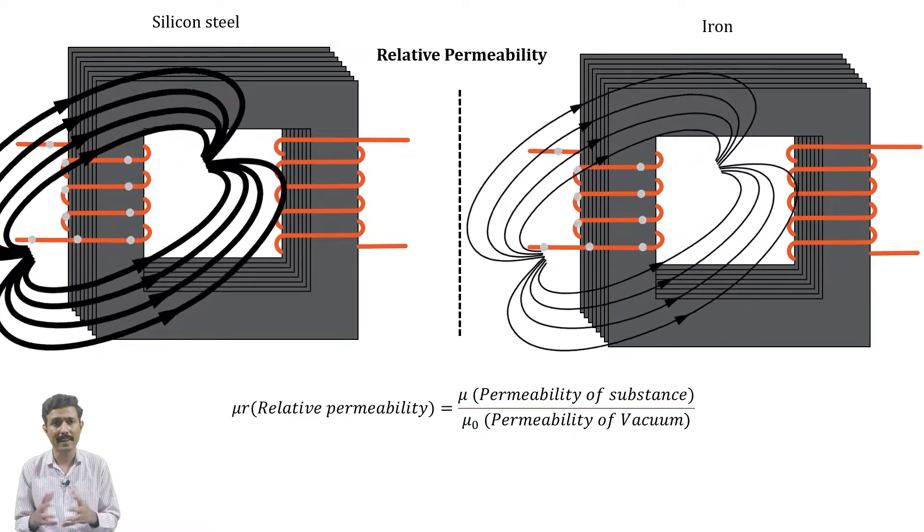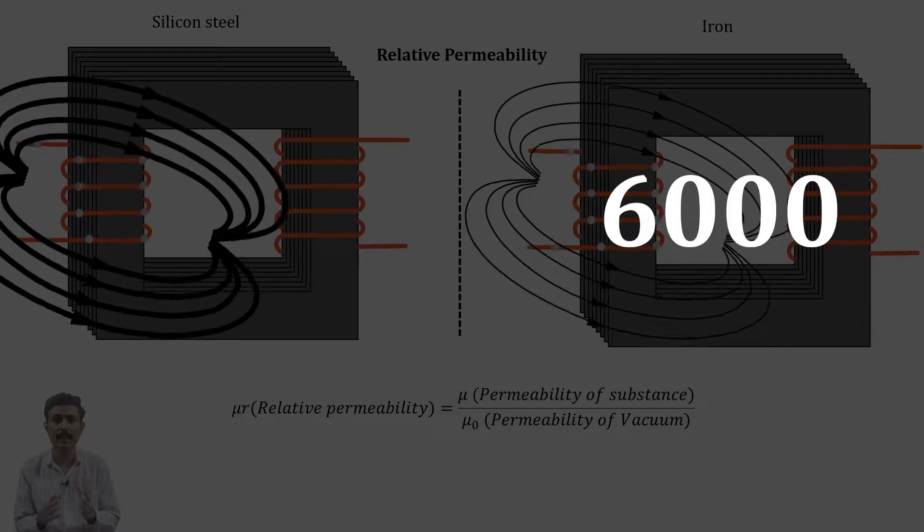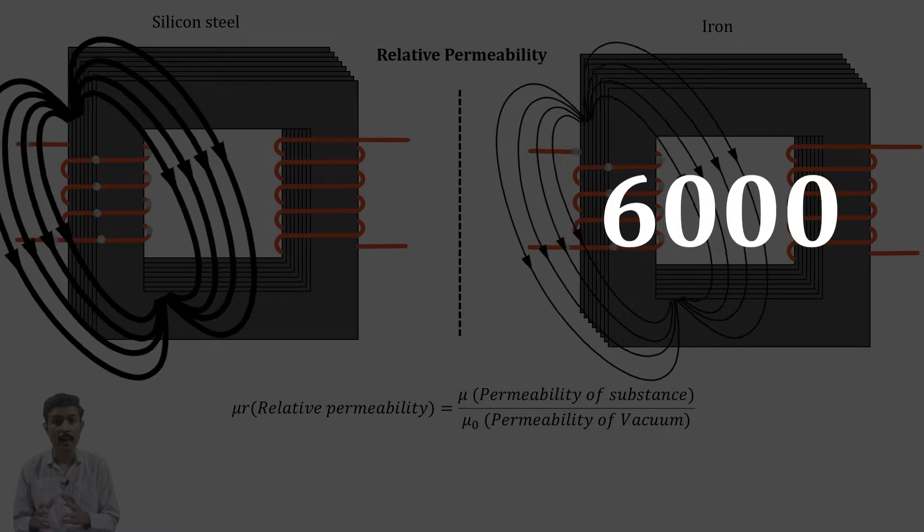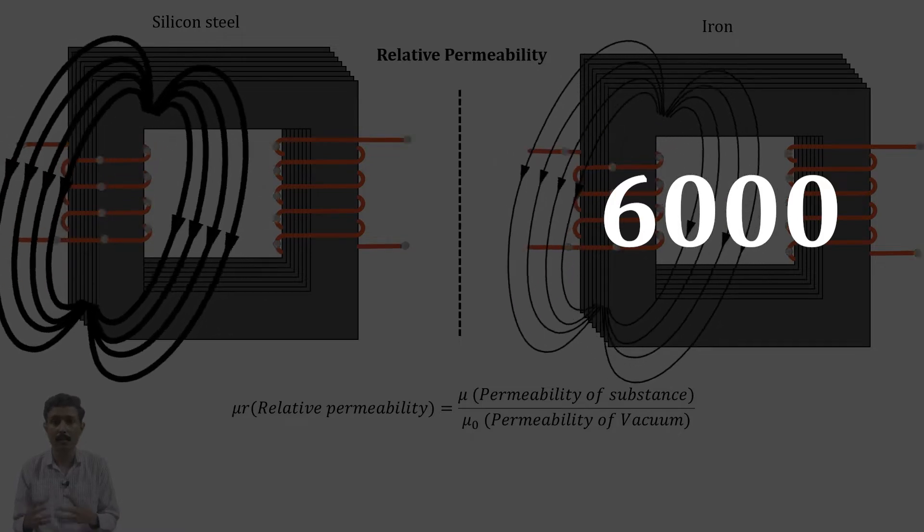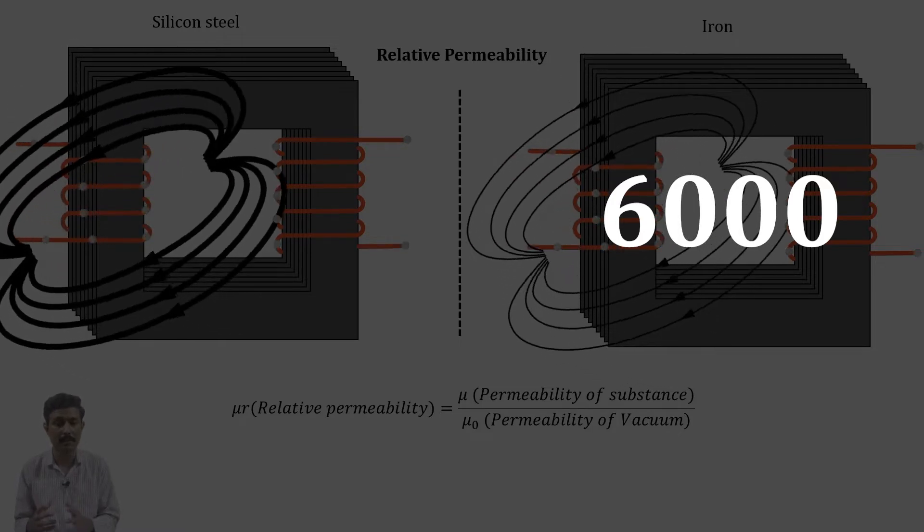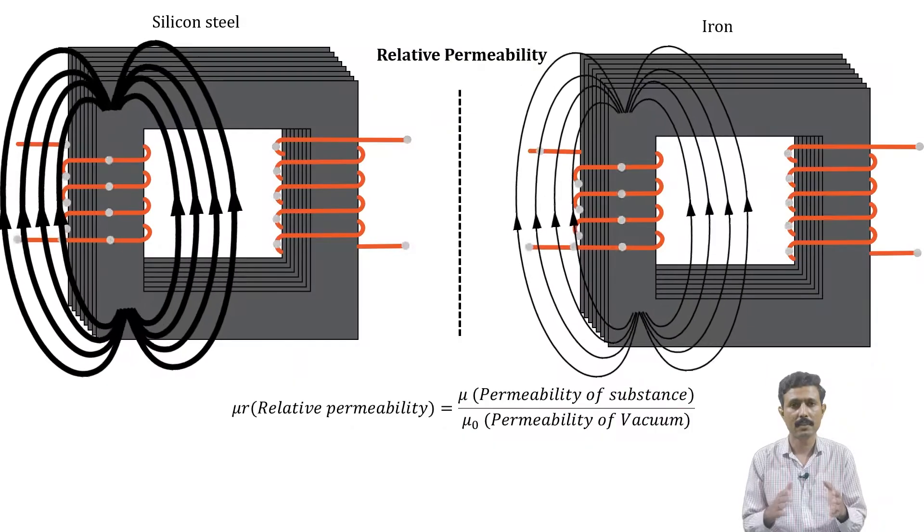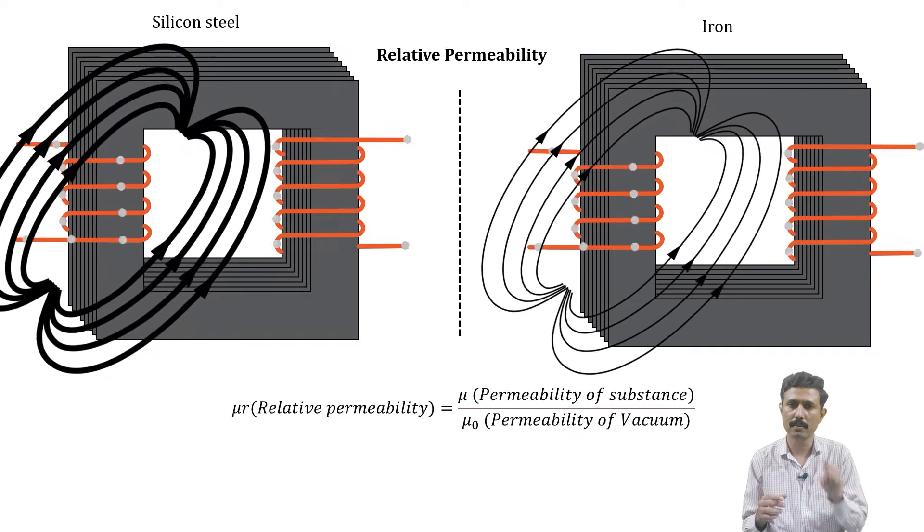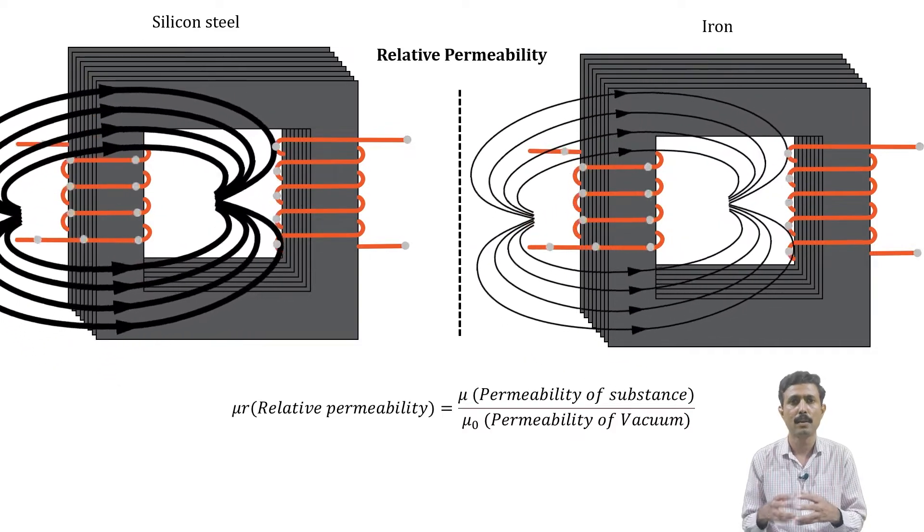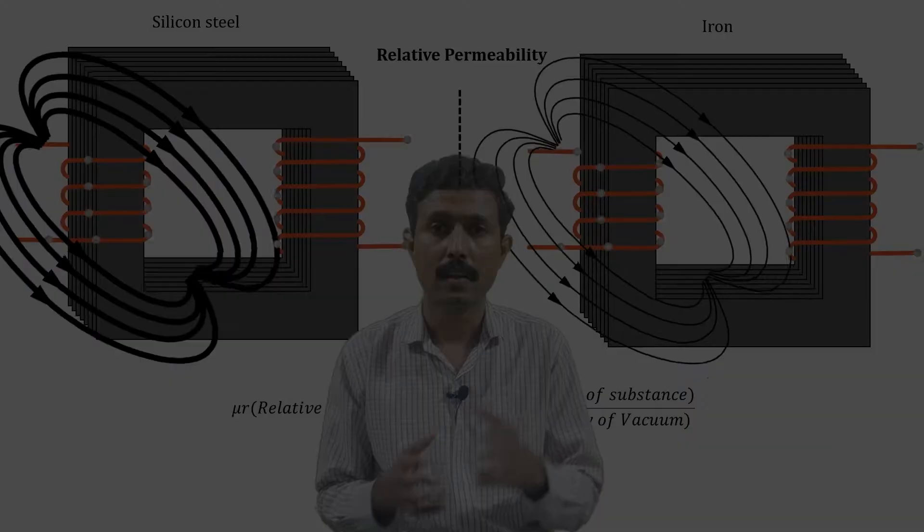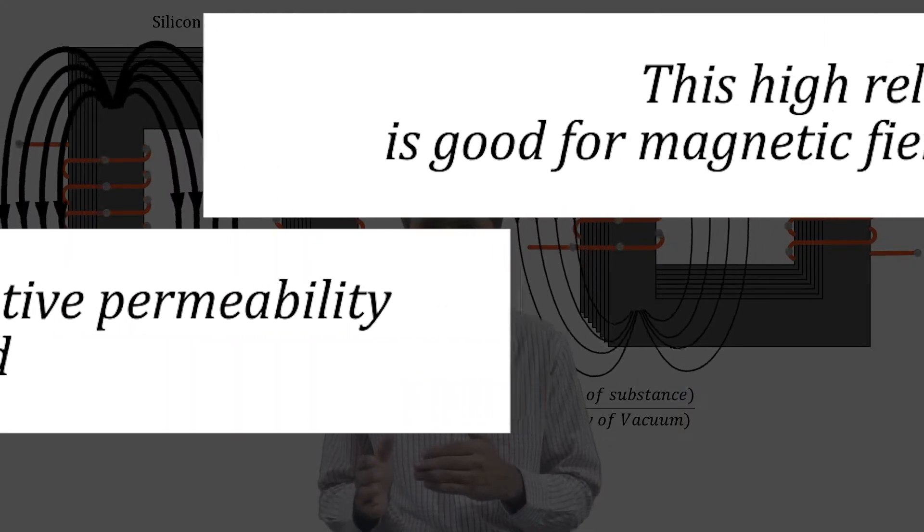If we talk about the relative permeability of iron, that is around 6000. And instead of iron, if we talk about the permeability of silicon steel material, then it varies from 2000 to 35,000. Now this variation is basically due to the percentage of silicon material used to form the silicon steel. Now this higher number of relative permeability makes it a good choice to serve our purpose.